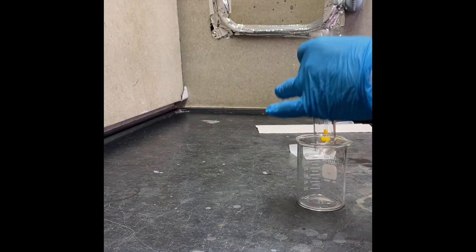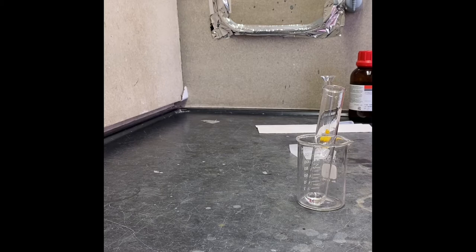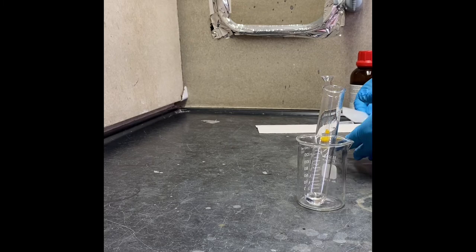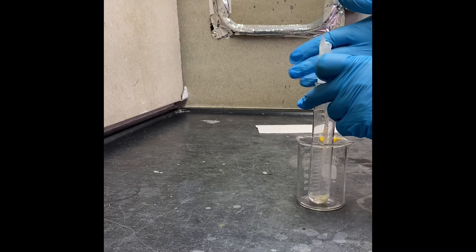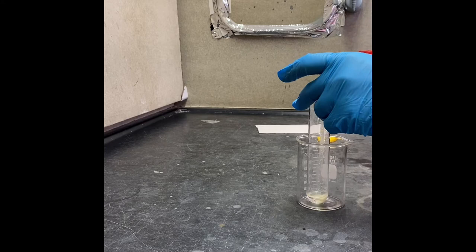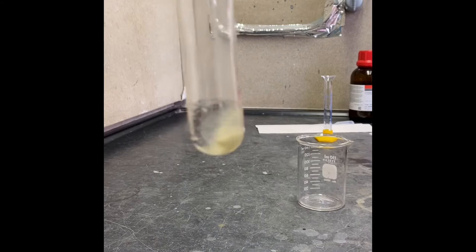And now I'm going to add 0.3900 grams of the crushed potassium hydroxide. That's the initial color.